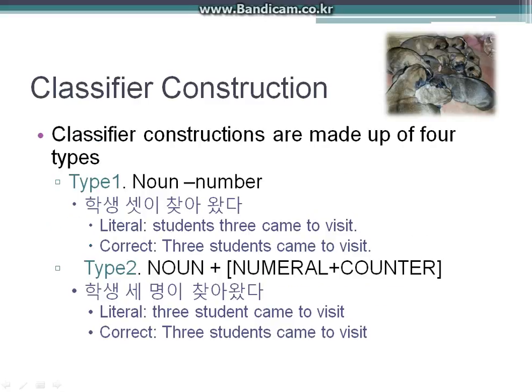For type 1, an example is 학생 셋이 찾아왔다. The literal translation is 'students three came to visit,' but the correct translation is 'three students came to visit.'